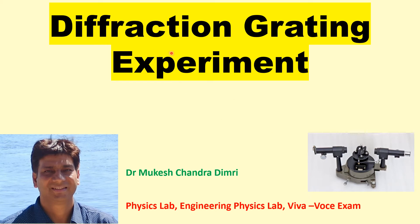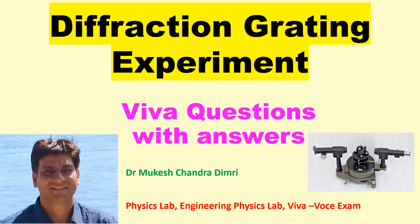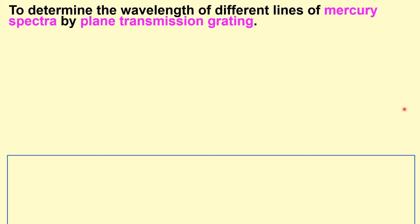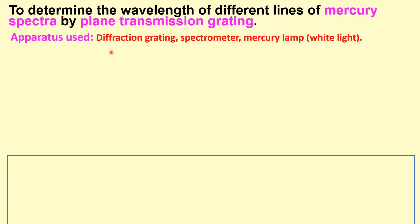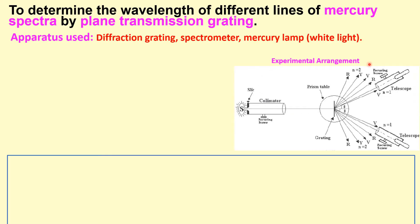Hello friends, today I will discuss the viva questions based on the diffraction grating experiment. I am Dr. Mukishan Dembri. The objective of this experiment is to determine the wavelength of different lines of mercury by plane transmission grating. We need the diffraction grating spectrometer, mercury lamp, and white light source. This is the experimental arrangement.